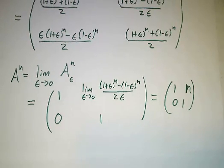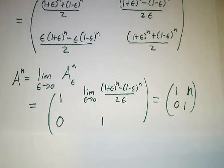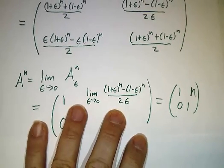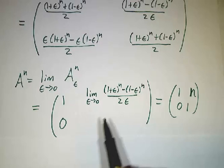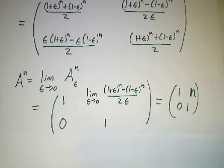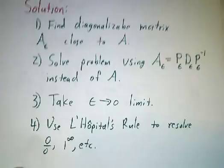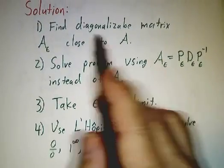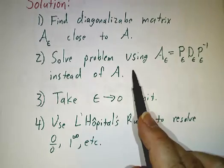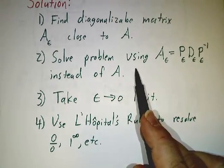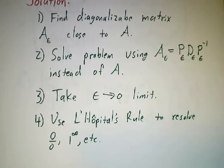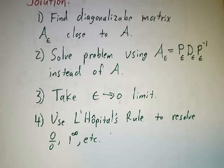So there we go. We solved our problem. Now this was a particularly simple example of a matrix. In general, we'll have to be a bit more creative in finding perturbations. But the whole idea is the same. Bump the matrix a little bit to get something diagonalizable. Solve the problem using diagonalization. Then take epsilon goes to 0 and use L'Hopital's rule whenever you're stuck with something that looks like 0 over 0.